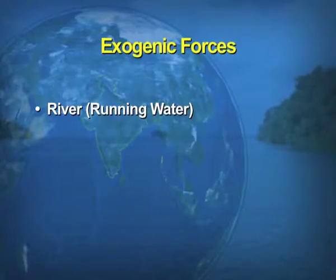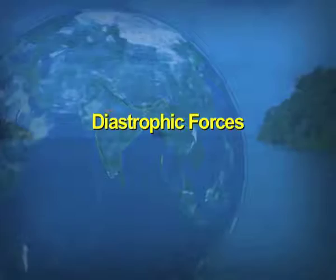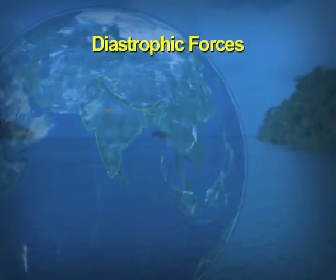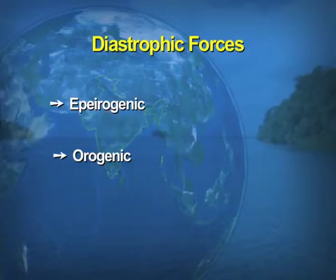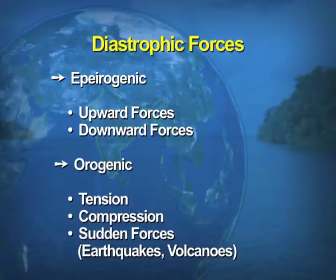Here is a diagrammatic view of the classification of forces. Exogenic forces work on the surface of the Earth and have agents such as rivers (running water), wind, and glaciers. Endogenic forces are diastrophic, further divided into epeirogenic and orogenic. Epeirogenic movements are upward and downward forces, while orogenic forces involve tension and compression, plus sudden movements like volcanic eruptions and earthquakes.